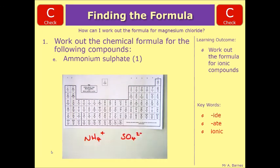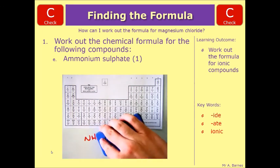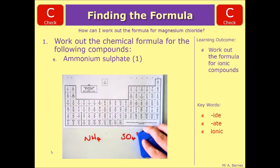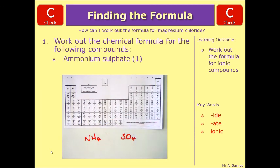And we do the same thing. So rub out the charge on both sides. And then move that 2 down below onto the left-hand side. So it becomes NH4 2. Straight away you can see the issue. So we need to put a bracket in because it is a compound ion. So I get NH4 in brackets, 2, SO4.